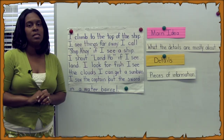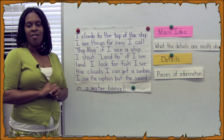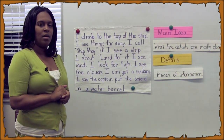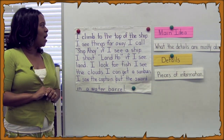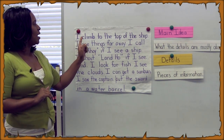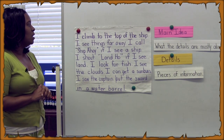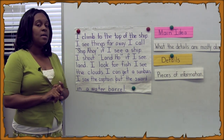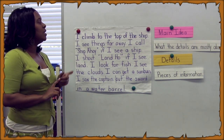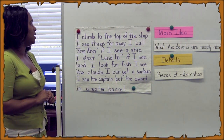Alright, so now we need to decide what role this person is playing. Are they the lookout? Are they the captain? Or are they the cabin boy? How would we find out what job this person does? First of all, we have to look at everything that this paragraph is telling us. It's giving us key ideas about what this person's job is. So let's go through and together look at some of the details that will support what our main idea would be.